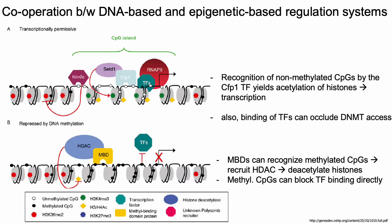Although we've talked about histone modifications and DNA methylation separately, these two systems for regulating gene expression actually interact quite closely. For example, when there's no methylation on CpG dinucleotides, transcription factors like CFP1 can come in and bind to these unmethylated CpGs and recruit other factors, which lead to acetylation of nearby histones, which then activates transcription. Furthermore, binding of TFs like CFP1 to non-methylated CpGs can basically prevent DNA methyltransferases from adding methyl groups to those CpG dinucleotides.